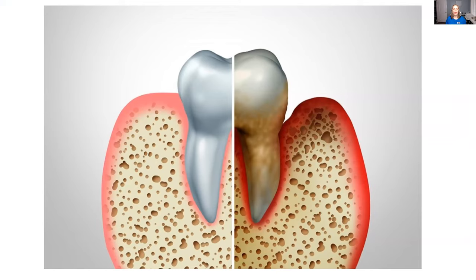Talking about gingivitis and perio — the one difference I want you to know is that gingivitis is reversible. If your patient has gingivitis and they start brushing and taking better care of their mouth, gingivitis can go away. But periodontal disease cannot go away, though it can be maintained and even improve a little in some cases. Gingivitis has to do with the gums primarily, whereas periodontal disease includes so much more — it includes the attachment levels, the bone, and the gums.